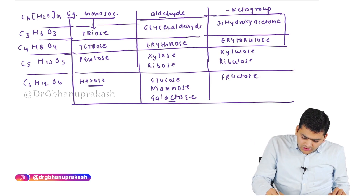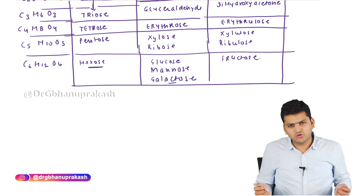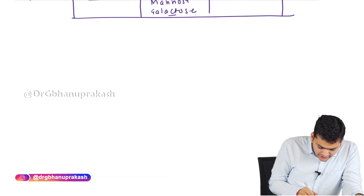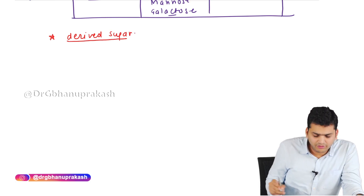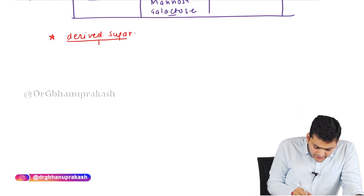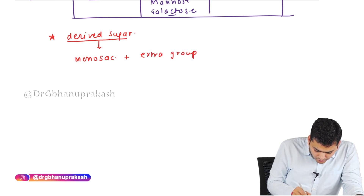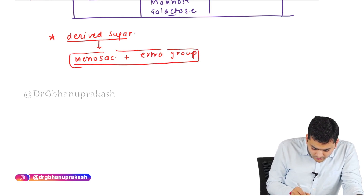There is a next version of monosaccharide called derived sugars. Derived sugar means: if you take a monosaccharide and add an extra functional group or any extra molecule to it, that combination is called a derived sugar. Monosaccharide such as glucose, galactose, or fructose — add anything extra and it becomes a derived sugar.